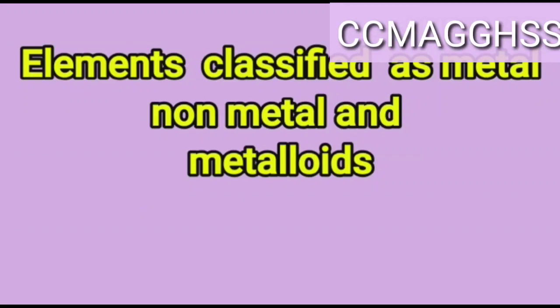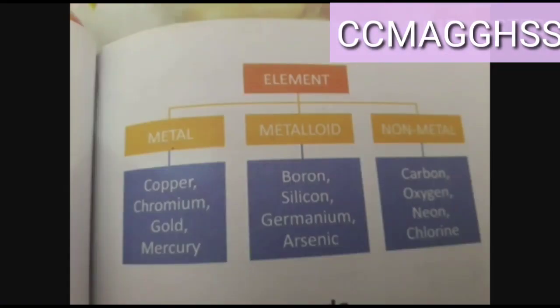Elements are classified as metals, non-metals, and metalloids. Examples of metals are copper, chromium, gold, and mercury. Examples of metalloids are boron, silicon, germanium, and arsenic. Examples of non-metals are carbon, oxygen, neon, and chlorine. Metals conduct heat, while non-metals do not conduct heat. Elements are thus grouped into three categories: metal, metalloid, and non-metal.